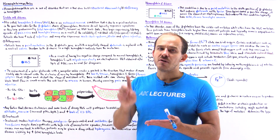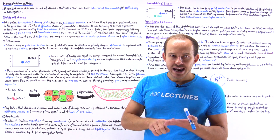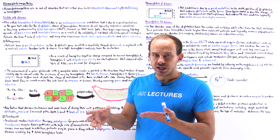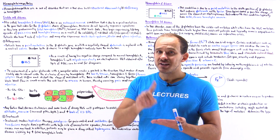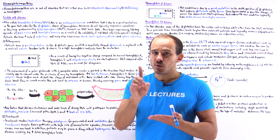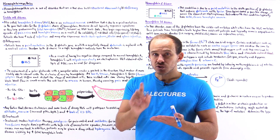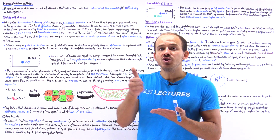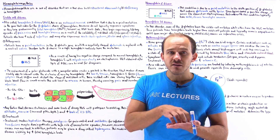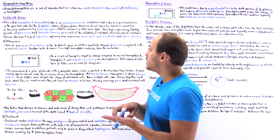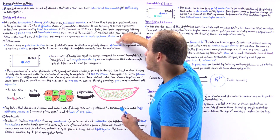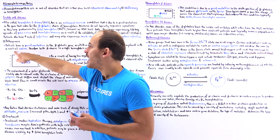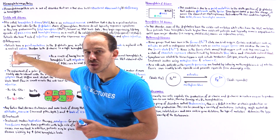We have a point mutation within our gene that transforms the sixth amino acid — the negatively charged glutamate — into a neutral valine. So we go from a hydrophilic glutamate to a hydrophobic valine.